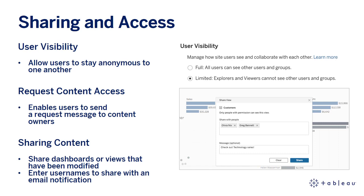Last up are two features called Share What You See and Named Sharing. When sharing a dashboard or view that has been modified through selections, filters, or zooming and panning, sharing will automatically generate a link that includes these interactions. Additionally, simply enter the names of any named user on the site to send them an email with the dashboard or view image and an optional note.